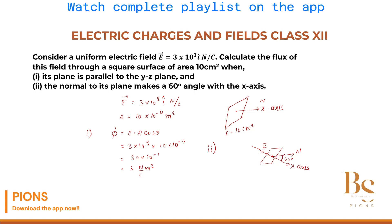So what will be the flux now? Flux equals E which is 3 into 10 to the power 3, multiplied by area 10 to the power minus 4, into cos of 60 degrees. This gives 30 into 10 to the power minus 1, and cos 60 is half, so it becomes 15 into 10 to the power minus 1, which is 1.5. The unit is Newton meter square per coulomb. Be very careful with the angles — the angle is always taken between the field and the normal.